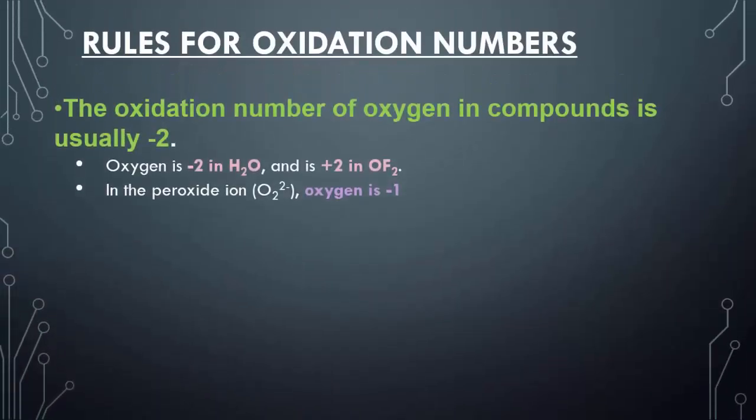Oxygen is always going to have a negative two charge, because on the periodic table, oxygen's only charge is negative two. However, there are some exceptions. When you have a compound like oxygen difluoride, OF2, oxygen has to have a positive two charge, because the fluorines each have a negative one charge. Fluorine is highly electronegative, which is the only reason why oxygen ends up with a positive two in this scenario.